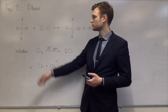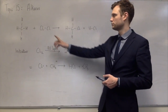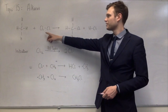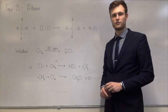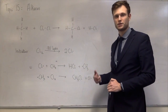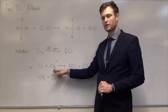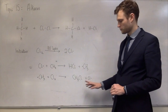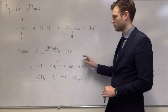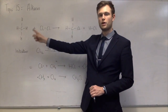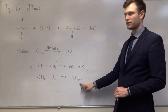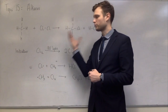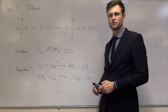The next thing that happens is this methyl radical collides with a chlorine molecule. The methyl radical reacts with Cl2 to make chloromethane, and the bond in Cl2 is broken, leaving chloromethane but also a chlorine radical. This process can just repeat: the chlorine radical reacts with another methane to give HCl and a methyl radical, and that methyl radical reacts with another Cl2 to make chloromethane and a chlorine radical. These are called propagation steps — they continue the reaction, making the products and using up the reactants.